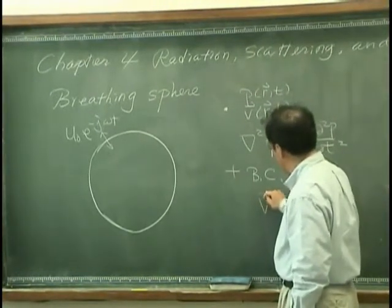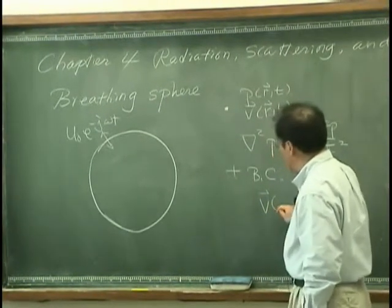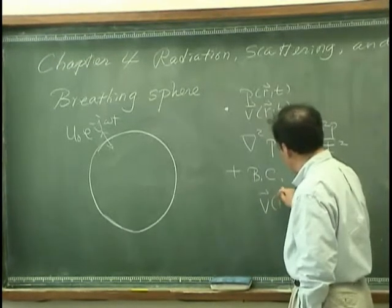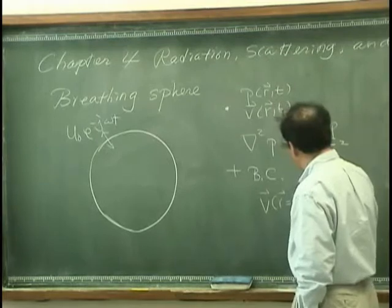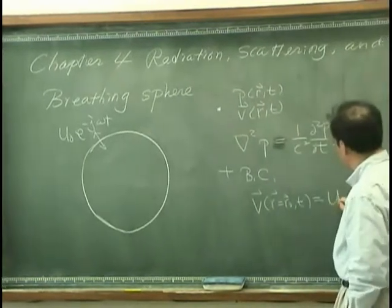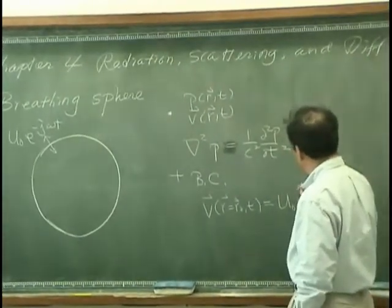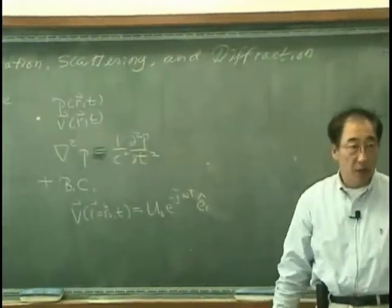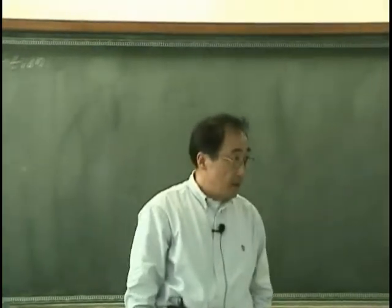The velocity at r equal r0 is u0. er is the unit vector in r direction.